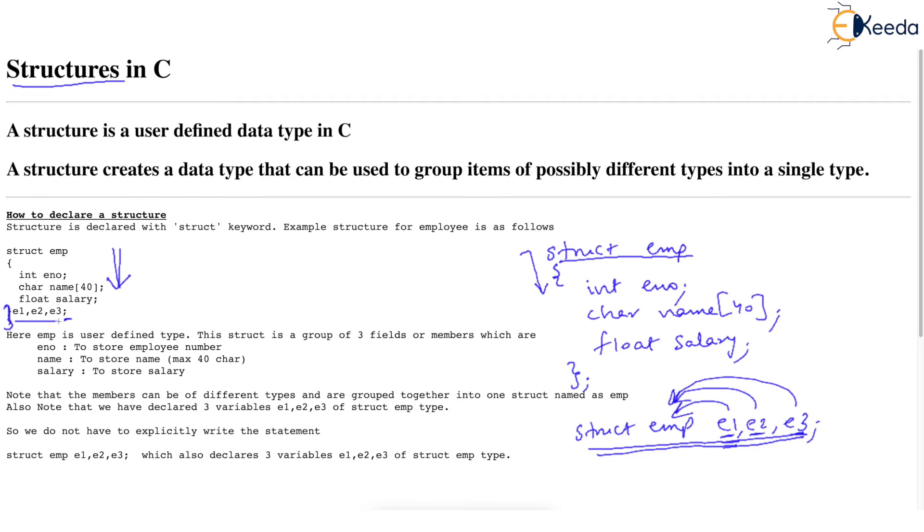Now try to understand E1, E2, E3 are again variables of type struct EMP. So you may, what you may do is you can declare a structure, end it with semicolon and then you can use a line where you declare three variables or four variables or